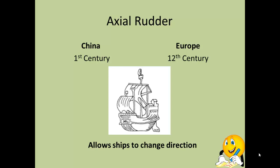One of the Chinese developments was the axial rudder. China developed this in the first century — around the time of Jesus — while Europe didn't develop it until the 12th century, more than 1,100 years later. The axial rudder allows ships to change direction, so they're not at the mercy of hoping a wind turns them around. They have much more control over where they're going, giving huge advantages in long-distance travel.